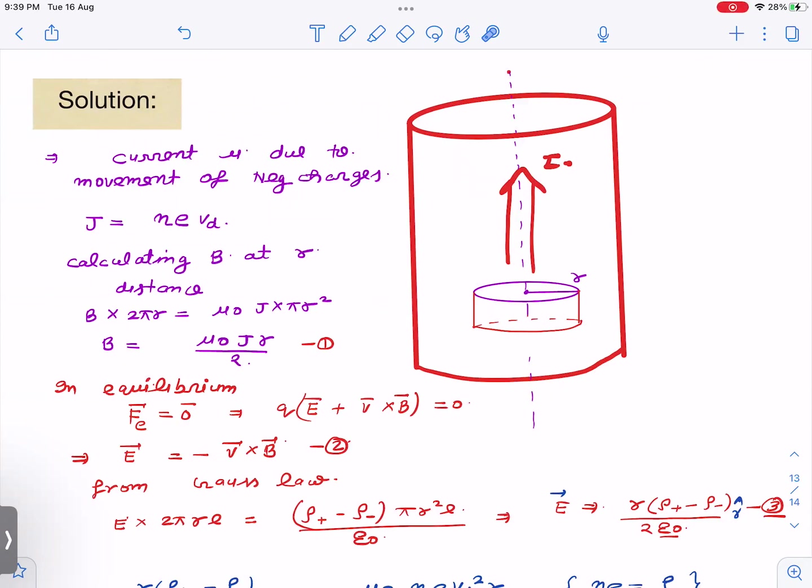Let us see how we analyze here. Suppose this is cylinder and current I is flowing. Current is due to the movement of negative charges, and then current density J equals nEVD, where VD is drift velocity. I've written all the magnitudes. From this we can calculate magnetic field at distance r. So magnetic field at r distance will be mu naught J r by 2. I have applied Ampere's law here.